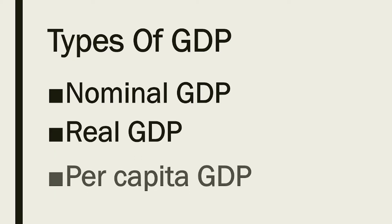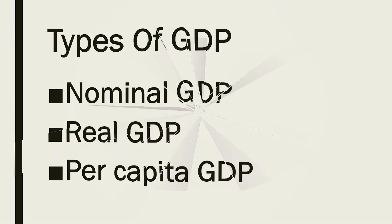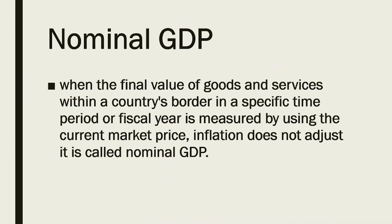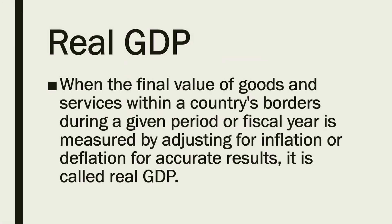Types of GDP: in this class we'll discuss nominal GDP, real GDP, and per capita GDP. First, nominal GDP — when the final value of goods and services within a country's border in a specific time period or fiscal year is measured by using the current market price and inflation does not adjust it, it is called nominal GDP.